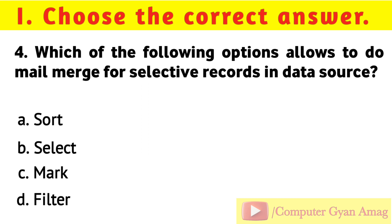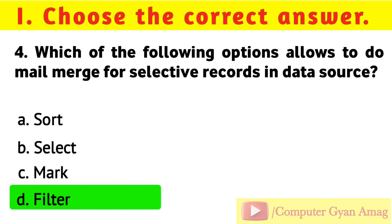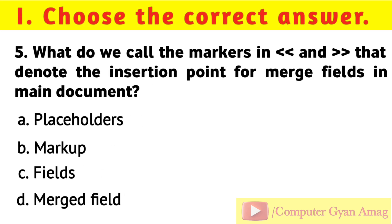Question 4: Which of the following options allows you to do mail merge for selective records in the data source? Your options are: A) Sort, B) Select, C) Mark, D) Filter. Correct option is D: Filter.